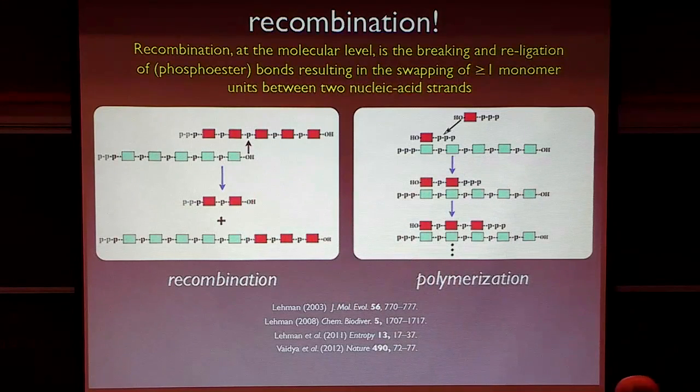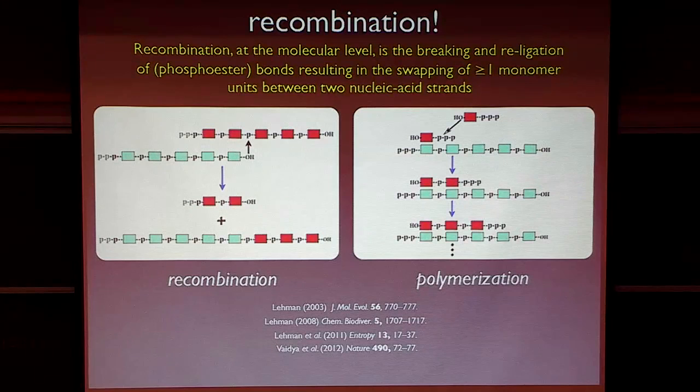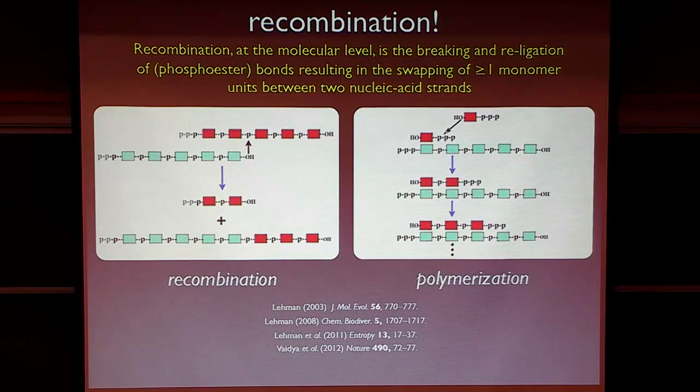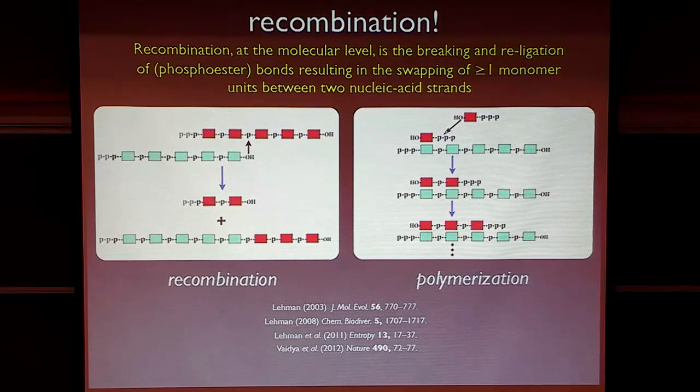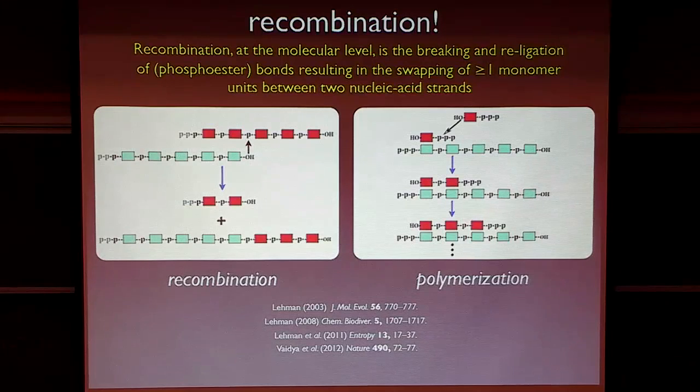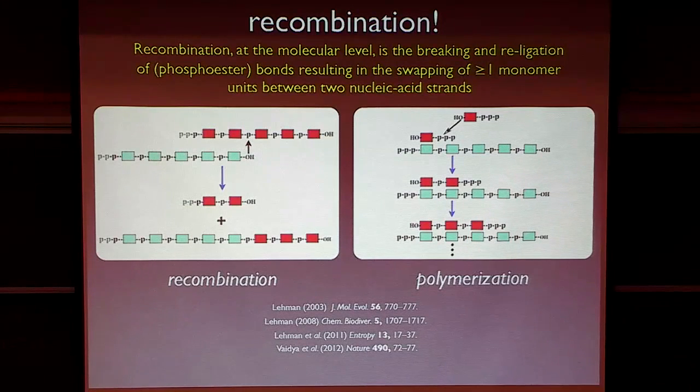and these two strands are going to come together. A bond is going to be broken. Another bond is going to be made at the same time, and we're going to form two new strands, in this case, a short red strand and a chimeric green-red strand.